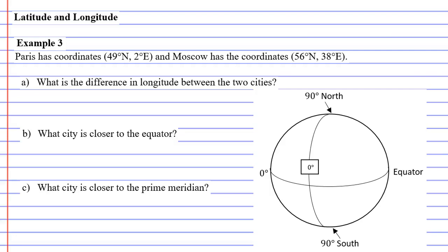Alright, we're on to example 3 now, and we have Paris with coordinates 49 degrees north, 2 degrees east, and Moscow, which has the coordinates 56 degrees north and 38 degrees east.